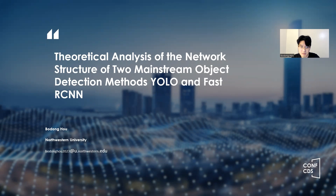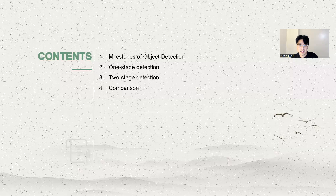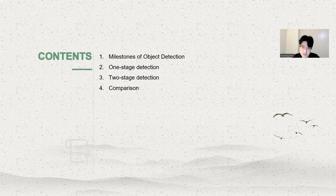For example, in self-driving cars, it's used to detect pedestrians and vehicles on the road. As a basic but most challenging task in the computer vision field, object detection has received extensive attention in recent years.